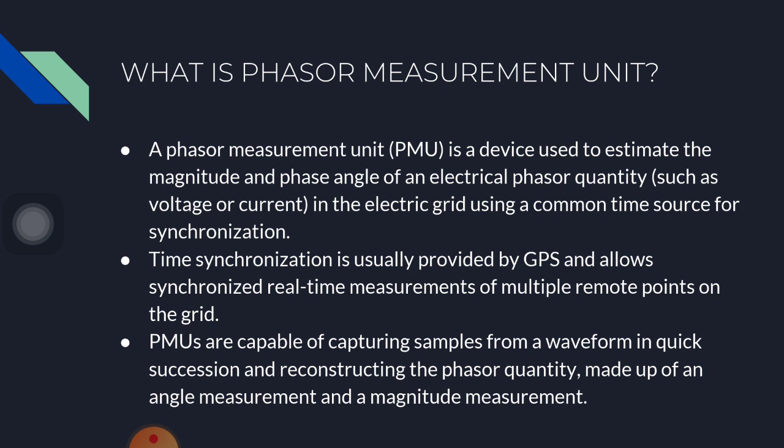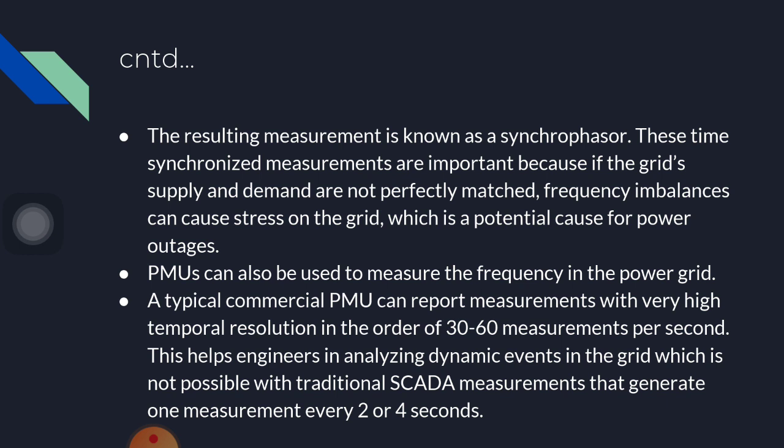What is PMU? A Phasor Measurement Unit is a device to estimate the magnitude and phase angle of an electric phasor quantity such as voltage or current. Time synchronization is usually provided by GPS and allows synchronized real-time measurement of multiple remote points on the grid. PMUs are capable of capturing samples from waveforms in quick succession and reconstructing the phasor quantity, made up of an angle measurement and magnitude measurement. The resulting measurement is known as a synchrophasor.